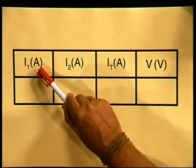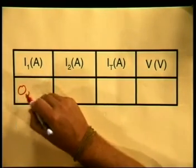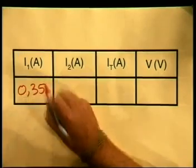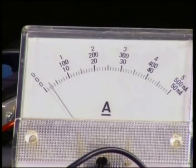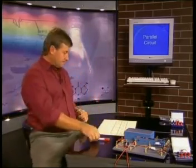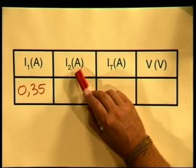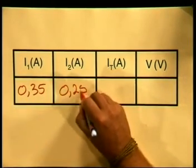Let's write that down on our table. R1 here represents the current passing through R1, and we write it down as 0.35 amperes. Let's now measure the current passing through R2. Notice that the needle has settled on 0.25 amperes. Let's write that back onto our table. I2, which measures the current through R2, is 0.25 amperes.